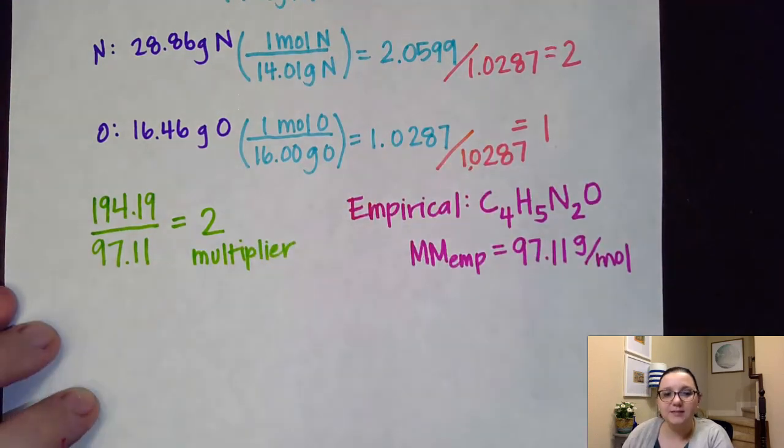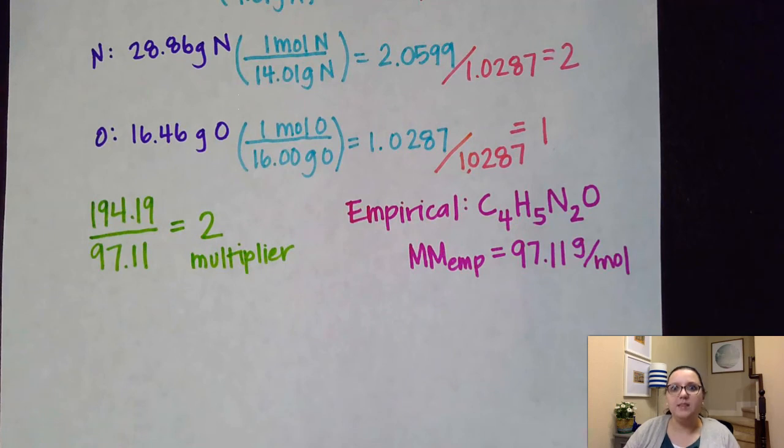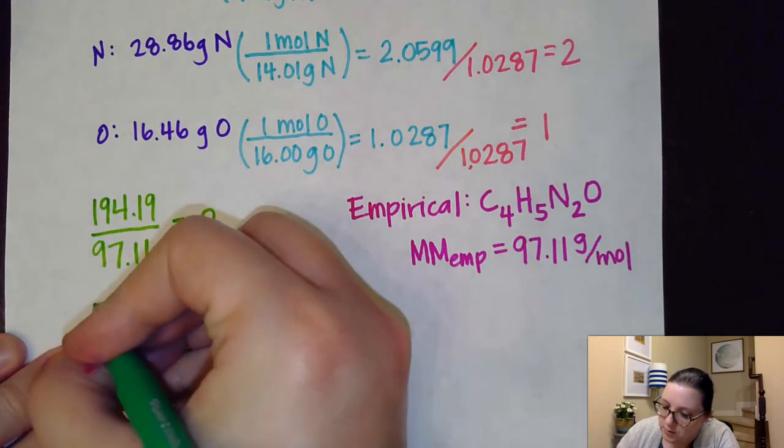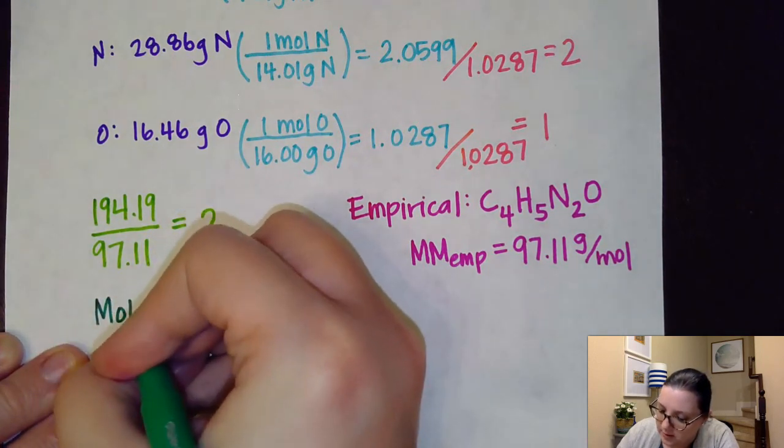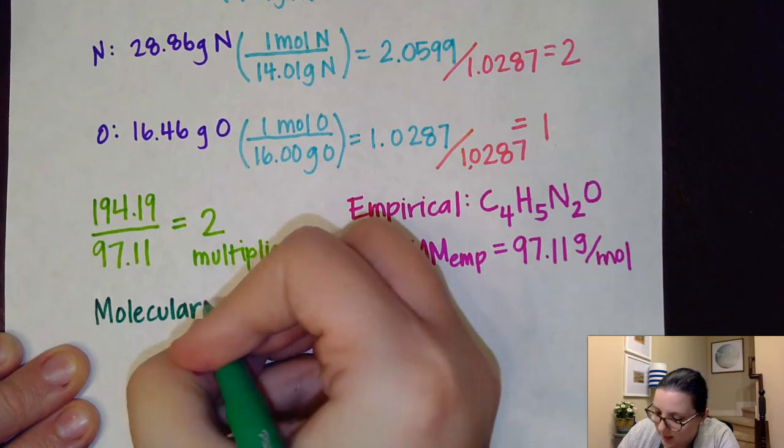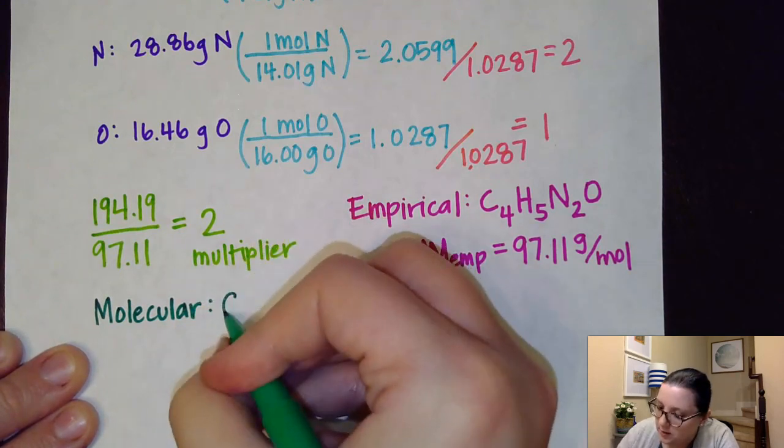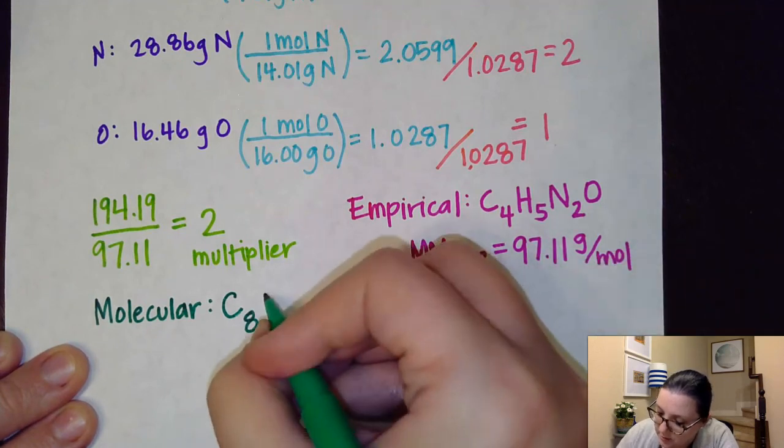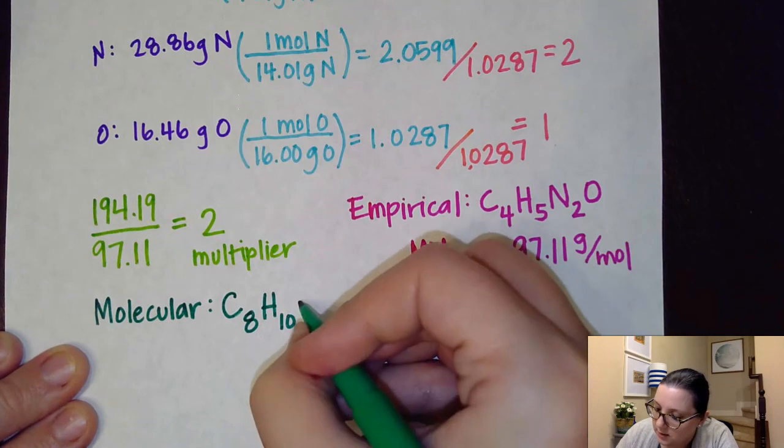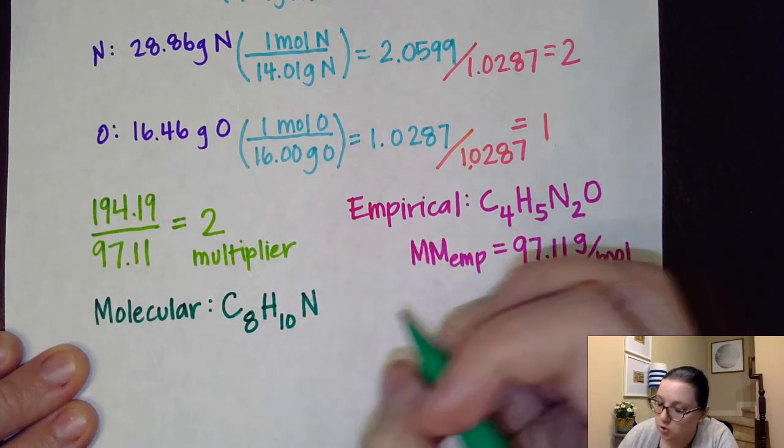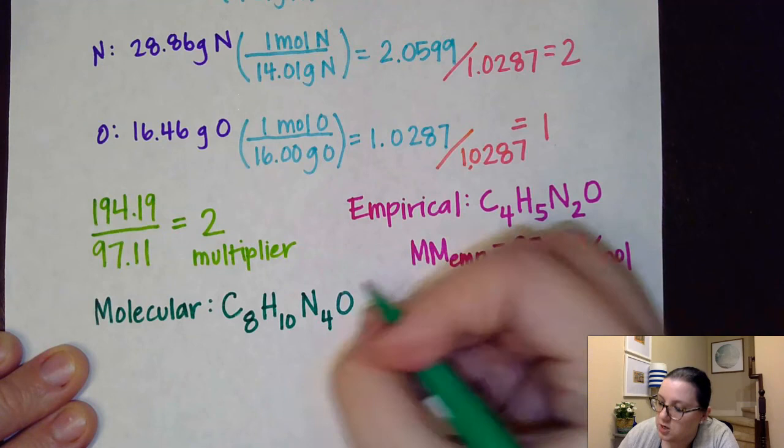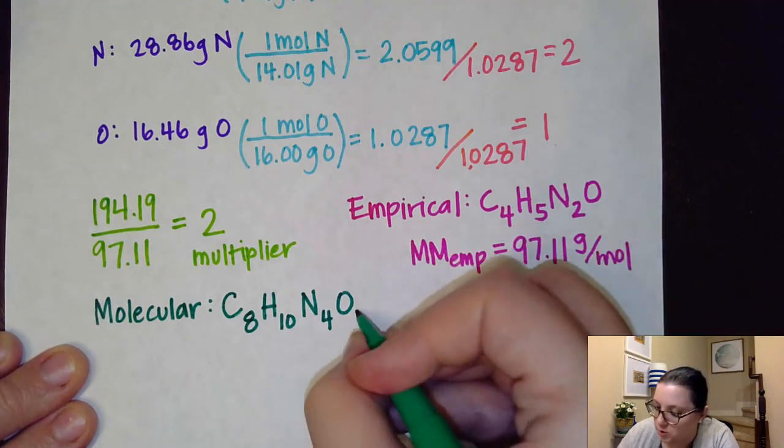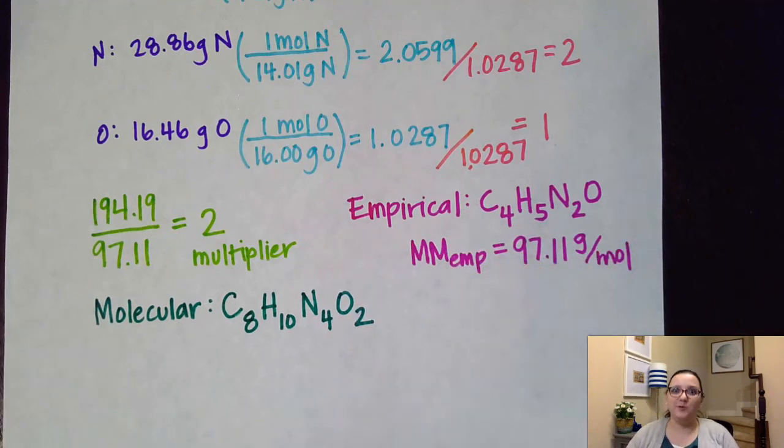What that means is that each of these subscripts in the actual molecular formula gets multiplied by 2. So my actual molecular true formula for caffeine would be carbon 4 times 2, which is 8. Hydrogen 5 times 2, which is 10. Nitrogen 2 times 2, which is 4. And oxygen 1 times 2, which is 2. So this is our true formula for the formula of caffeine.